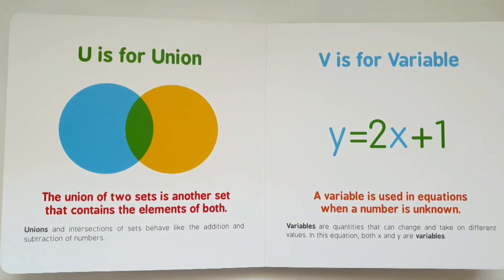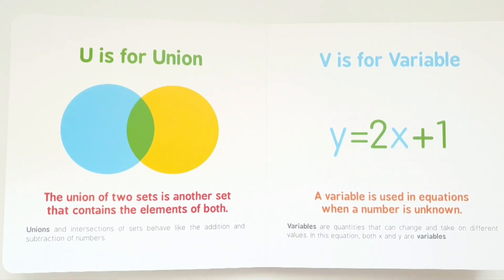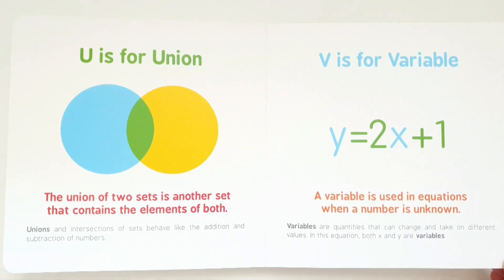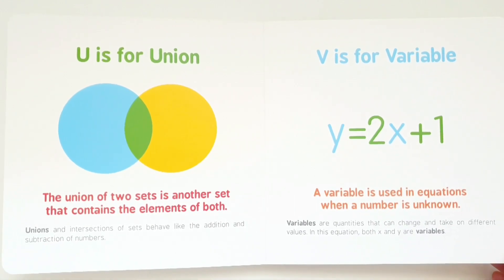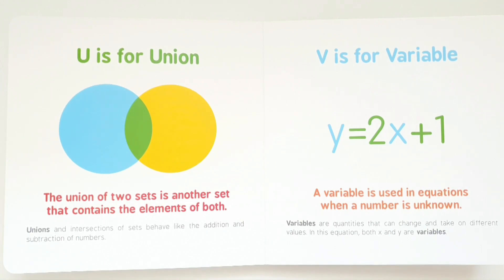U is for union. The union of two sets is another set that contains the elements of both. Unions and intersections of sets behave like an addition and subtraction of numbers.